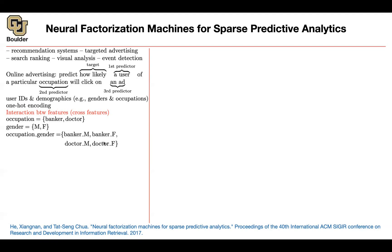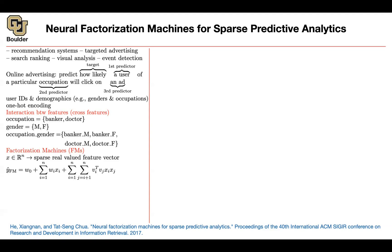In a factorization machine, you end up with a sparse real-valued feature vector. The prediction is the linear part plus the interaction terms. Because the interaction is symmetric, it is enough to look at the upper diagonal — pairs where j is greater than i. Per each i, you have corresponding embedding vectors vi and vj, which model higher-order terms. These are the learnable parameters: a linear part plus a non-linear interaction part.